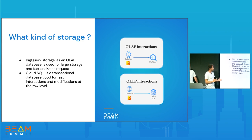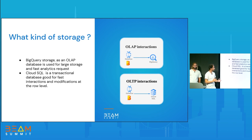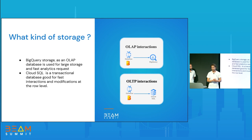Since we need an external storage system, what kind of storage can we use? On one side there is BigQuery, which is an OLAP database used for large storage and fast analytical requests. On the other end there is Cloud SQL and also Cloud Spanner, which allow more transactional workloads — and in our case that is more suitable because we need to apply many mini-transactions to interact with the database.